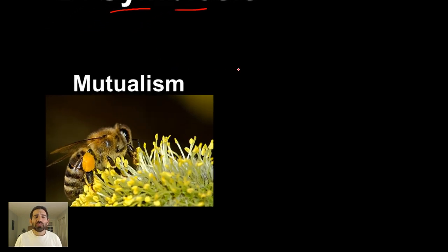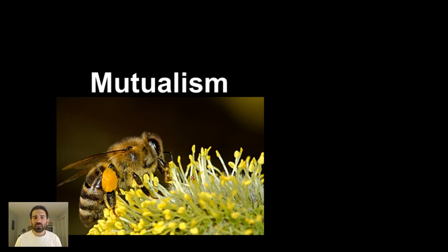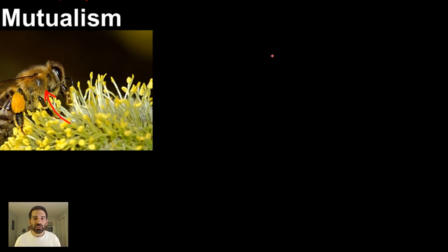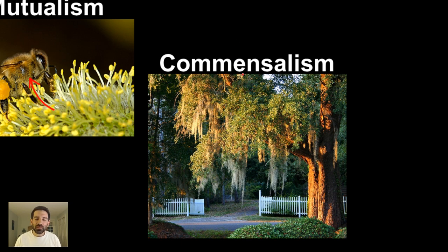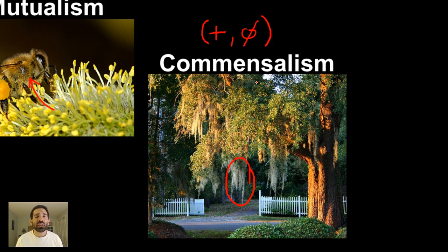Let's go over three examples of symbiosis. Symbiosis means living together — sym means together and bio means life. The first example is a bumblebee visiting a flower. In this relationship, the bumblebee gets fed and transports pollen so that the flower can reproduce — that's a win-win, or mutualism. The next one is commensalism, shown by Spanish moss hanging on a tree. The Spanish moss gets a place to live — that's a win — and the tree doesn't really care, so that's neutral. Commensalism is a win-neutral relationship.